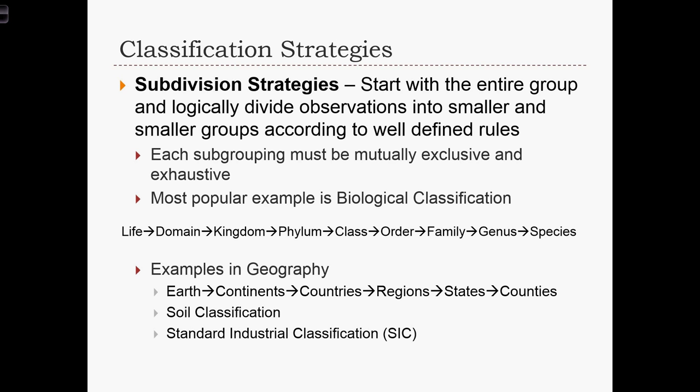Next we're going to learn about classification strategies. The first strategy is called the subdivision strategy. With subdivision strategies, we start with the entire group of data values and use some logic to divide observations into smaller and smaller groups according to well-defined rules. All groups must be mutually exclusive and the subgrouping must be exhaustive, so no observation can exist in more than one group, and all observations must be in at least one group.